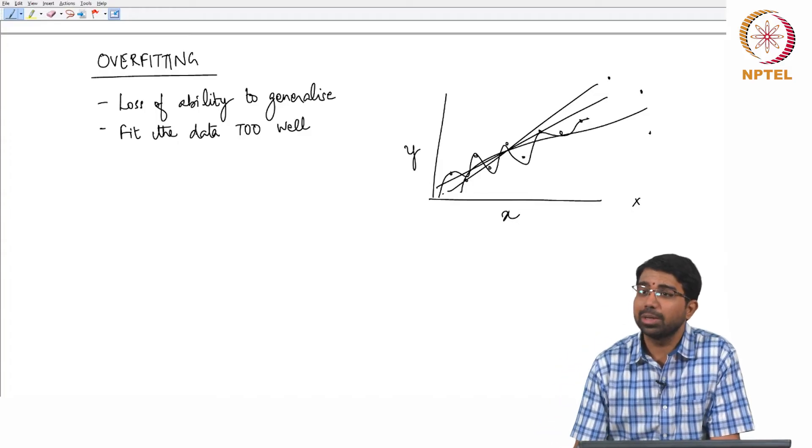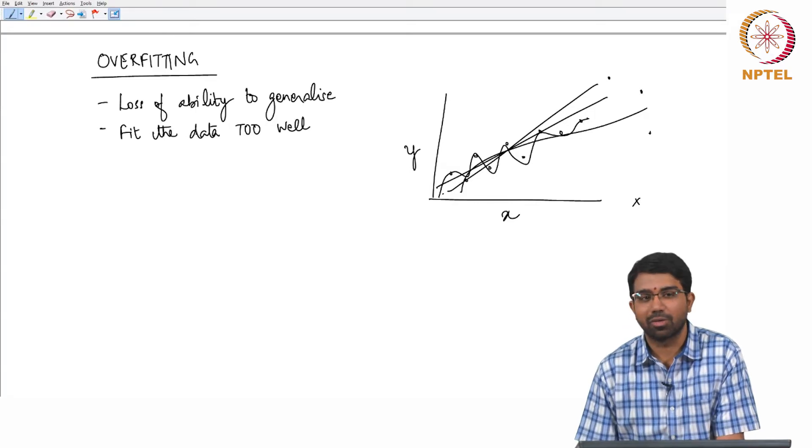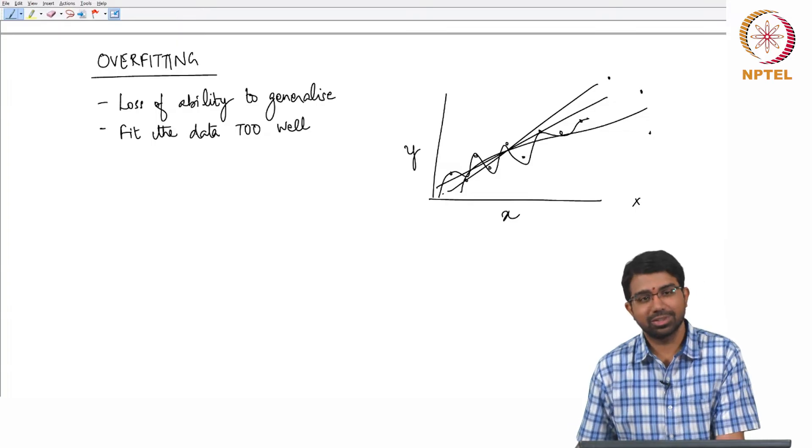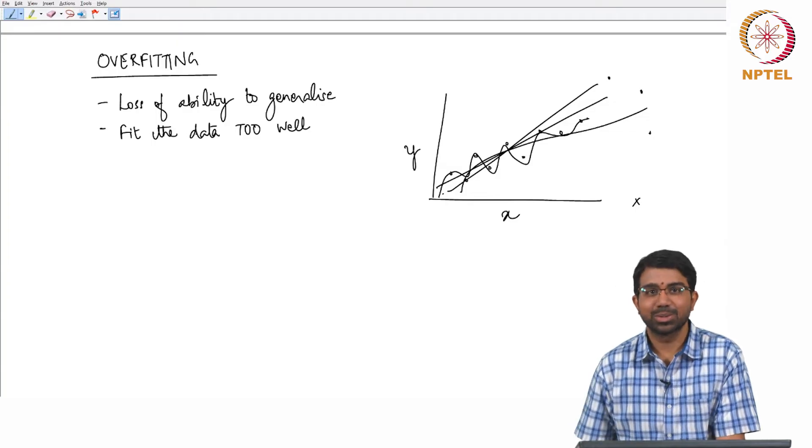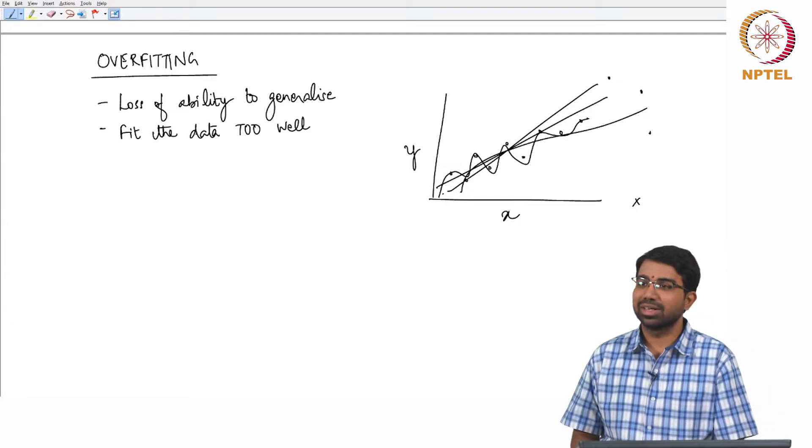So this becomes an important thing to worry about and this has very fundamental implications. How big should your model be? How many parameters should you have? The more parameters you have, you run a greater risk of overfitting but then there are so many processes to describe. So then I might need more parameters. So you have an interesting trade-off that needs to be arrived at.